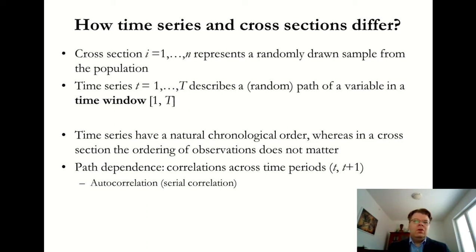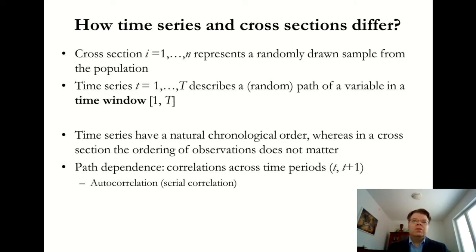In time series, it's not necessarily a random sample from a population in the same sense. We need to think about it in a slightly different way. We do observe all of the events within this time window; however, the thinking is that history might have evolved differently. If you think about the stock market, the price might have possibly developed in a different way if there were not some random shocks influencing the price during this time window. We can think of alternative histories or alternative time paths that don't necessarily realize — we only observe one realized time path among many alternatives.